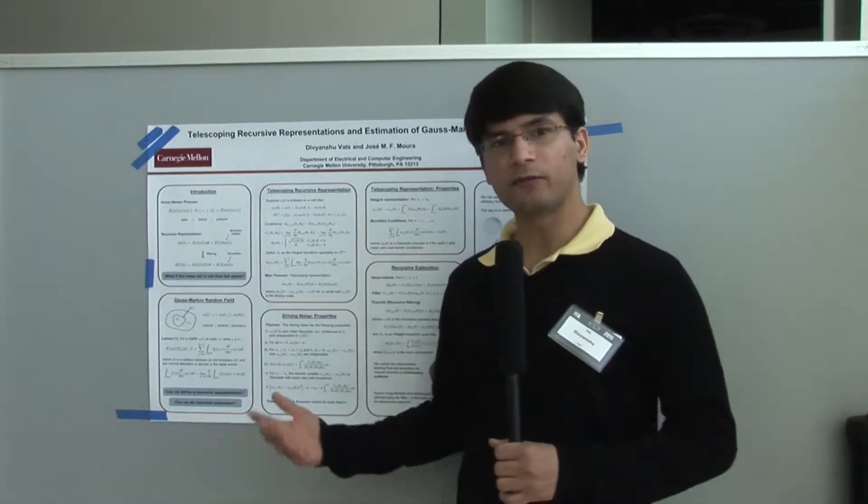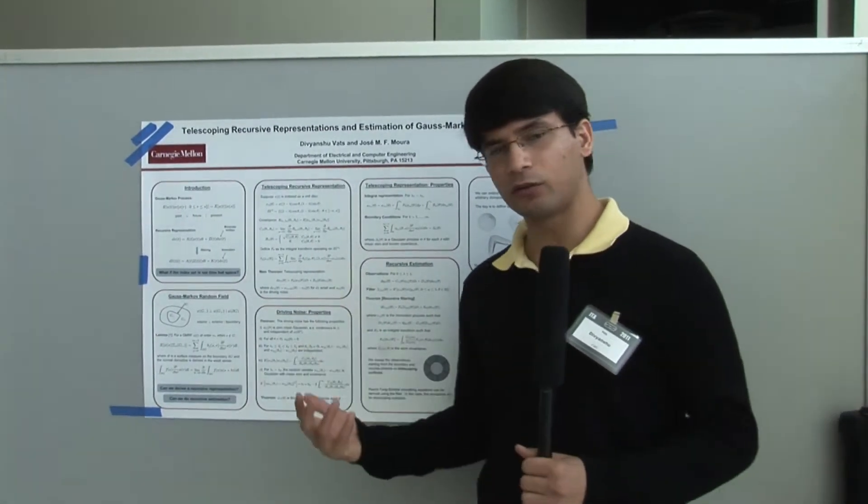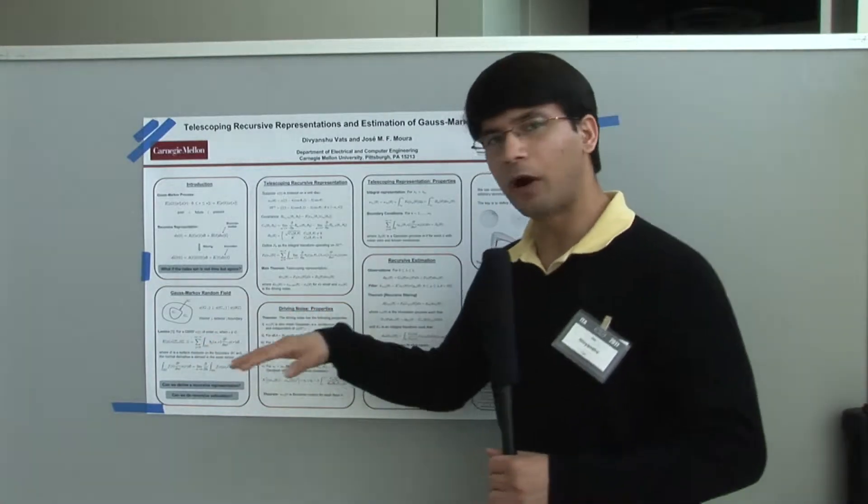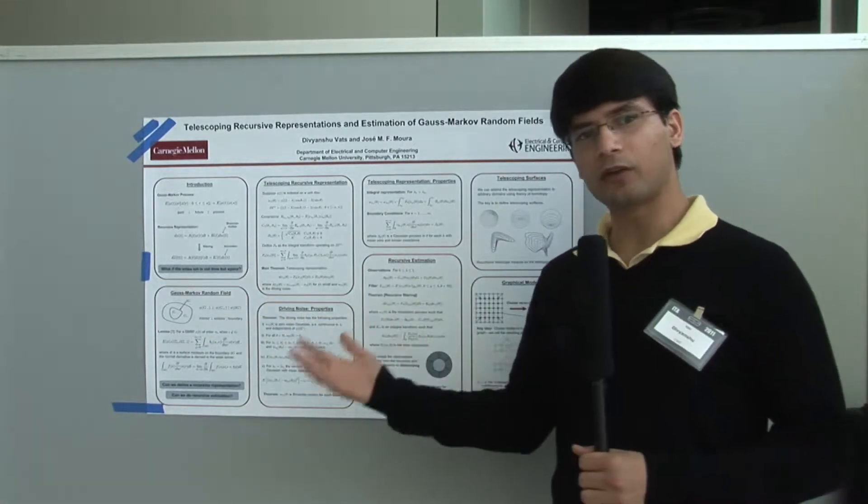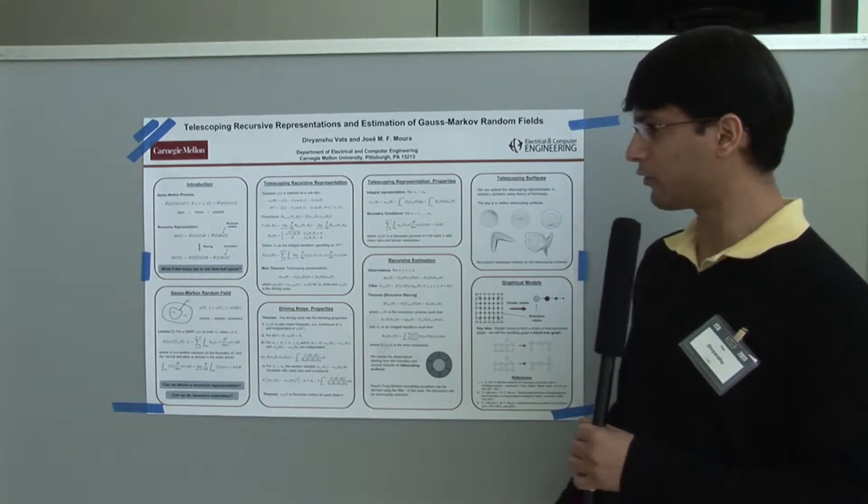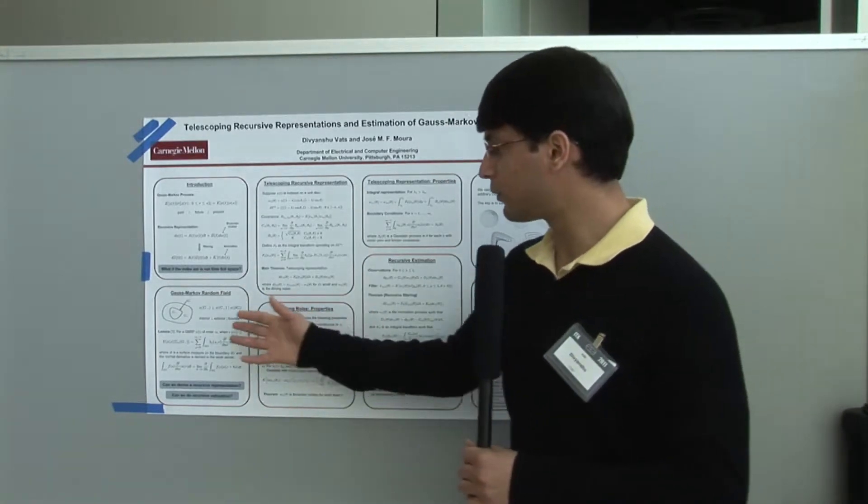For that, we consider random fields, defined as a collection of random variables indexed over high dimensions. The key thing is to derive some kind of Markovianity over random fields, which is defined by a Markov random field. The original definition was proposed by Levy in 1956. The key result of Markovianity